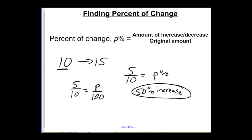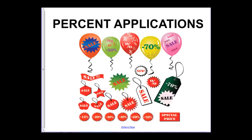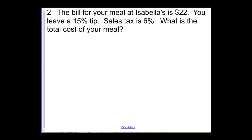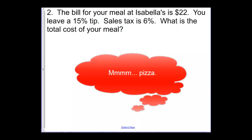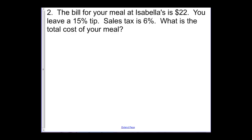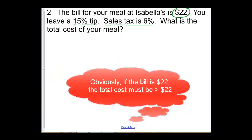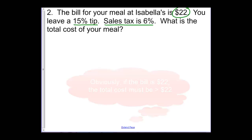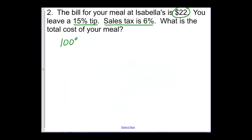That's not the only way that we're going to do application problems here today. Second question says, the bill for your meal at Isabella's is $22. You leave a 15% tip, sales tax is 6%. What is the total cost of your meal? By the way, if you're at Isabella's, I strongly recommend the Cajun pizza. It is delicious. Anyway, it costs $22. I want to figure out what the total cost of my meal is with a 15% tip and a 6% sales tax. One thing to keep in mind, if I'm looking for a total cost of a meal or something like that, I can't forget this $22 either. And so not only do I want 15% of the 22 and 6% of the 22, but I want that original 22.